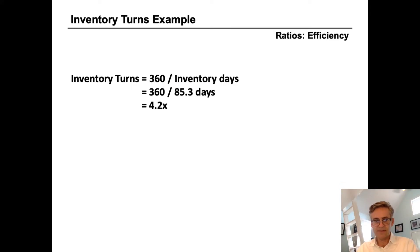So using the Hasbro example, then inventory turns is 360 divided by inventory days. We've just calculated inventory days at 85.3, so that will give us an inventory turn of 4.2.